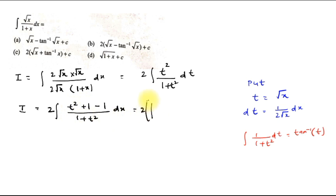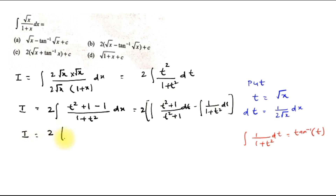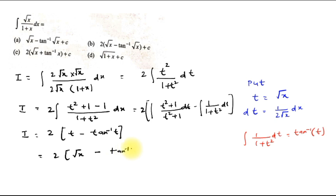Now we write this as 2 times the integral of (t² + 1 - 1)/(1 + t²) dt. Why? Because t² + 1 cancels with t² + 1 in partial fractions. So this becomes 2 times the integral of [1 - 1/(1 + t²)] dt, which equals 2 times [t - tan⁻¹(t)]. Coming back to the substituted value t equal to √x.